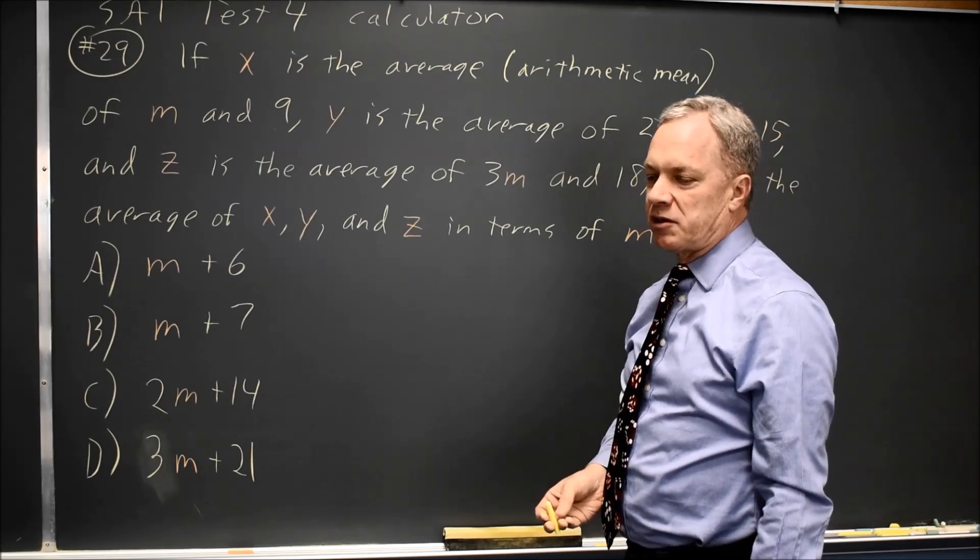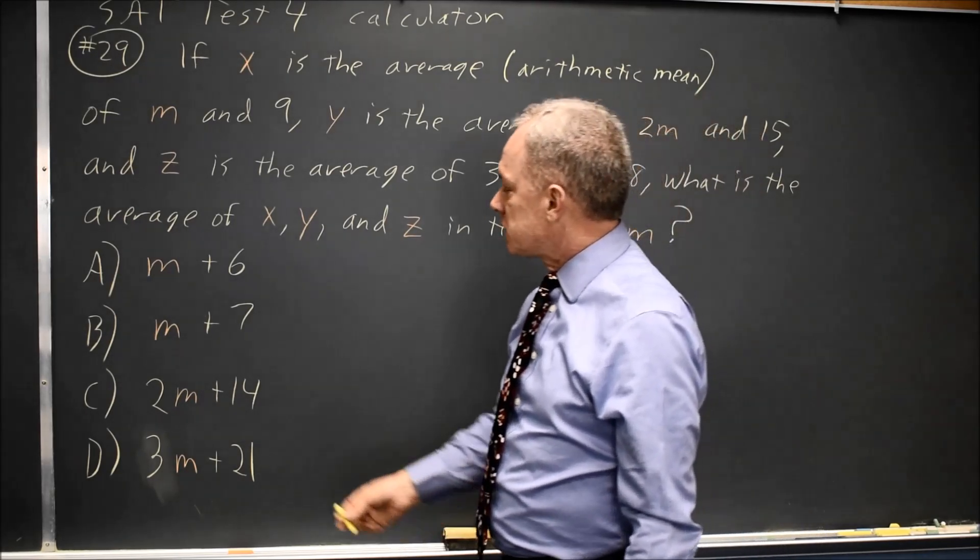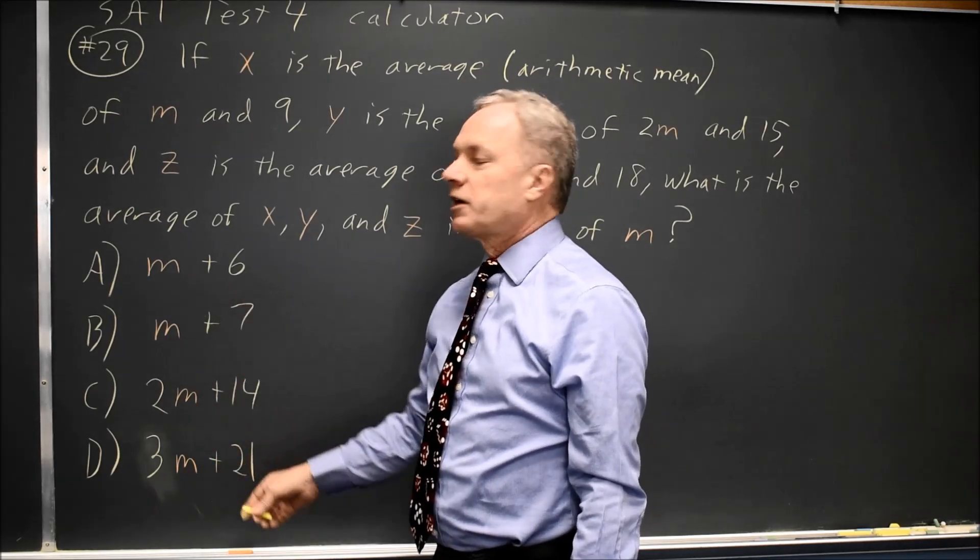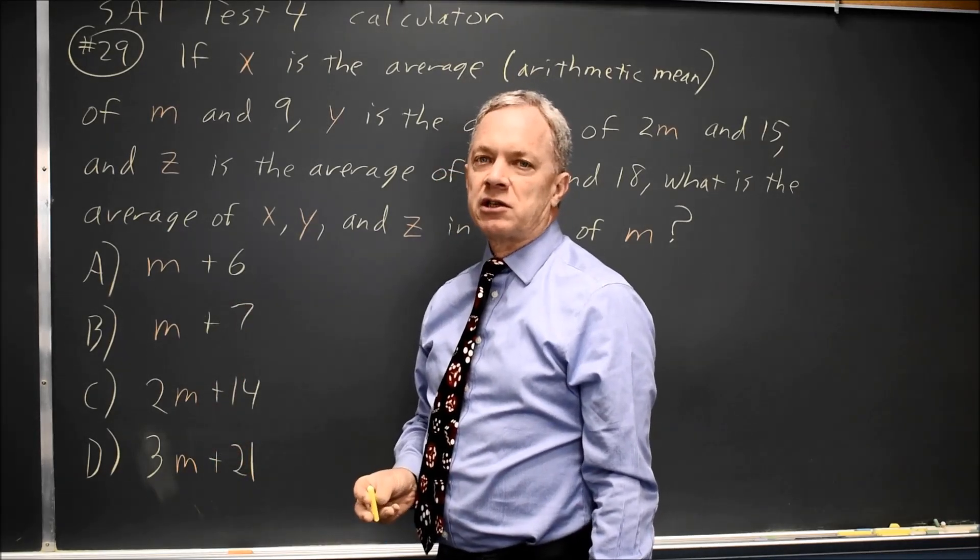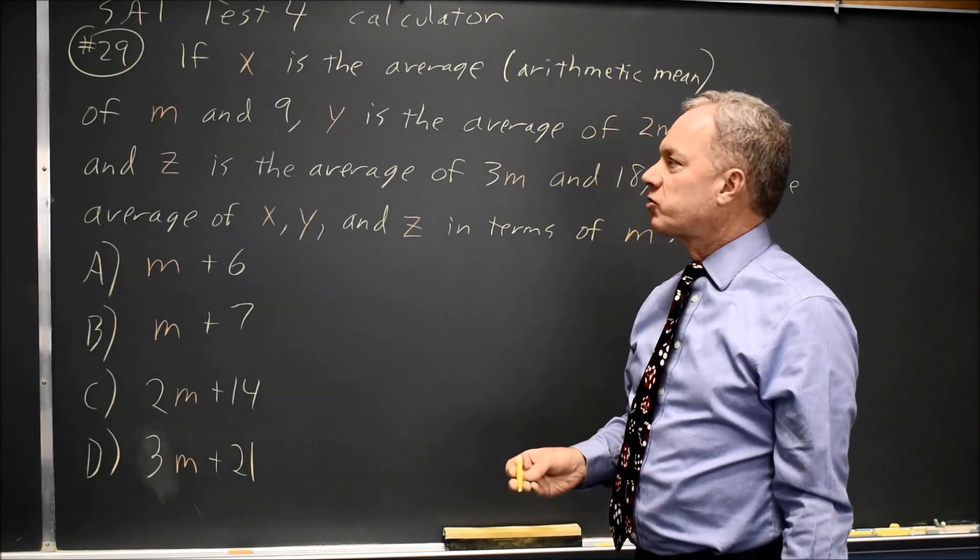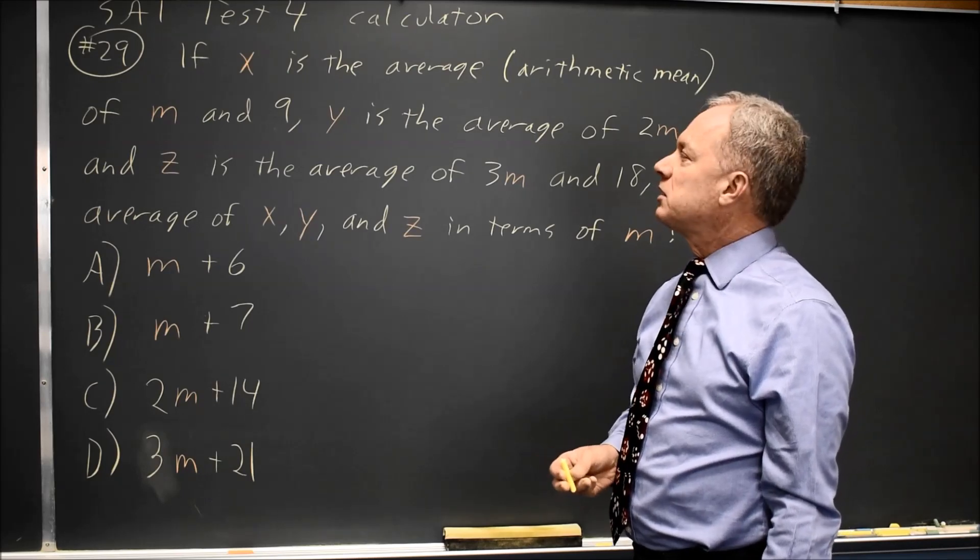My preferred method here is to choose a particular value for M to make it simpler. Since I noticed that if I use M equals 0, all four answer choices are different, the value that works for M equals 0 is the correct answer for all M. It just makes the algebra into arithmetic.